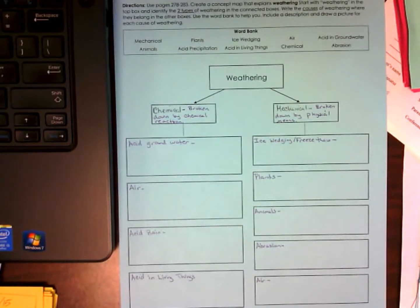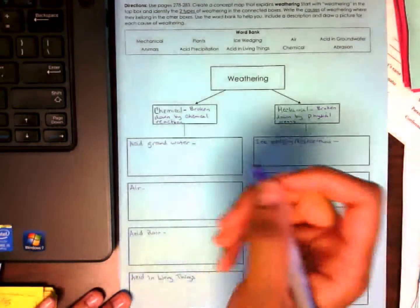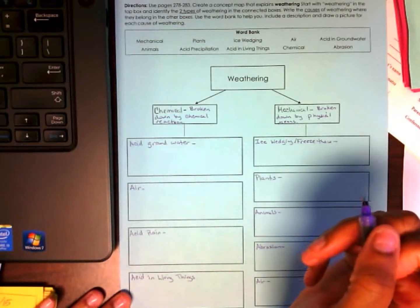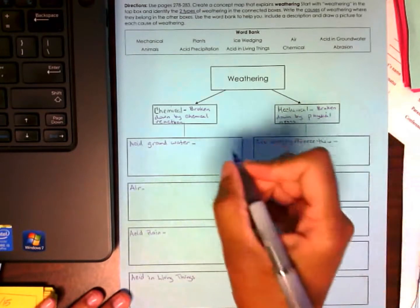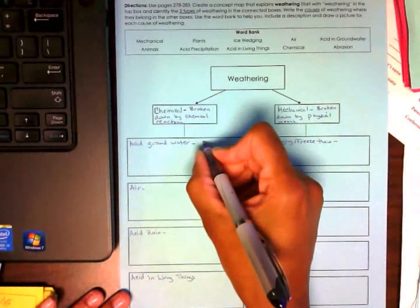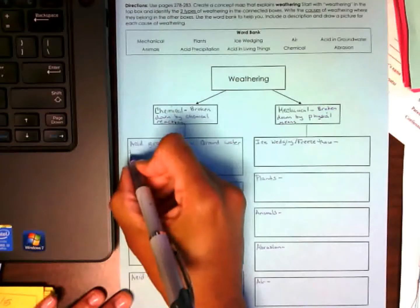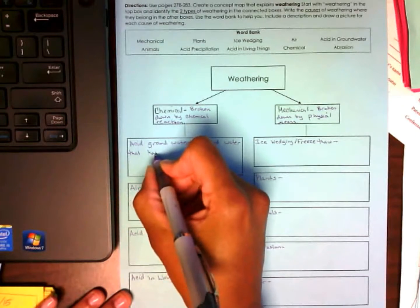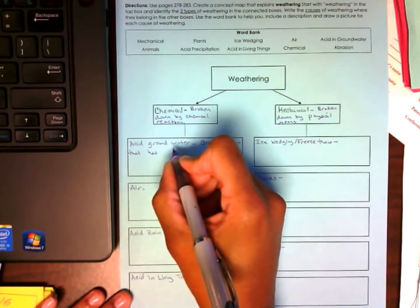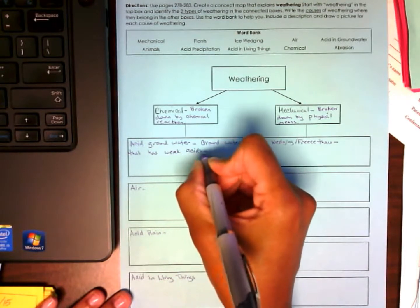Okay. So now we have our words that go in each of our boxes. So the next part that we need to do is give a description of what these boxes are. So in the description, who can tell me what acid groundwater is? Mr. Allen. Places that contain weak acids. I'm sorry. You said places? Yes. That contain weak acids? Yes. That happens under? Yes. There we go. Groundwater that has weak acids. Okay.